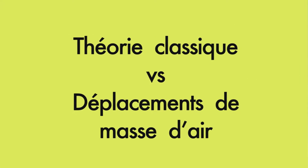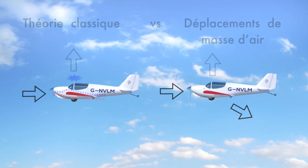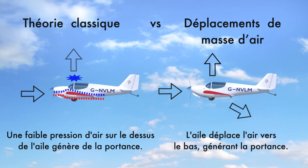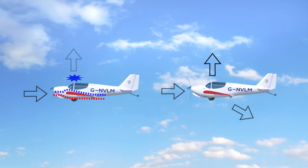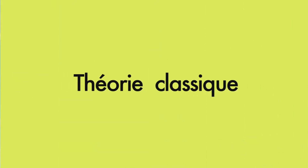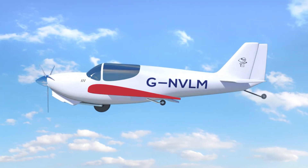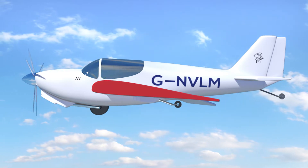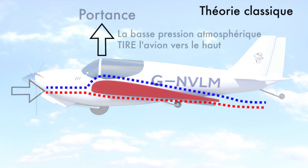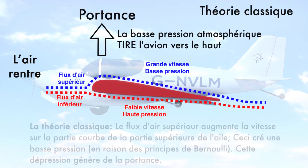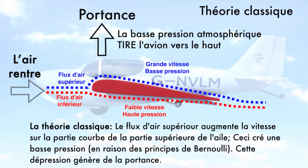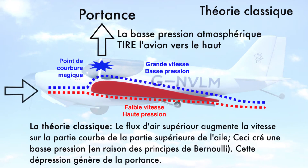I present two opposing views as to how planes generate vertical lift and fly. One view, taught at flying schools, is based on magic. The other view is based on a rational observation of reality. Every pilot is taught that planes fly because the curvature on the top side of the wing produces low air pressure, which then generates vertical lift. We call this the conventional theory.